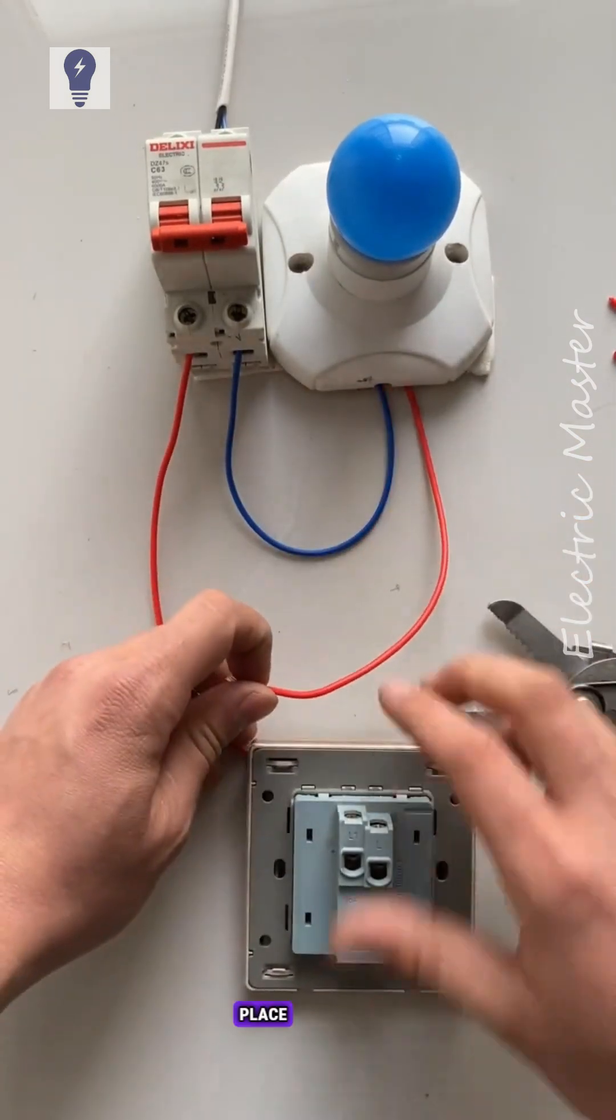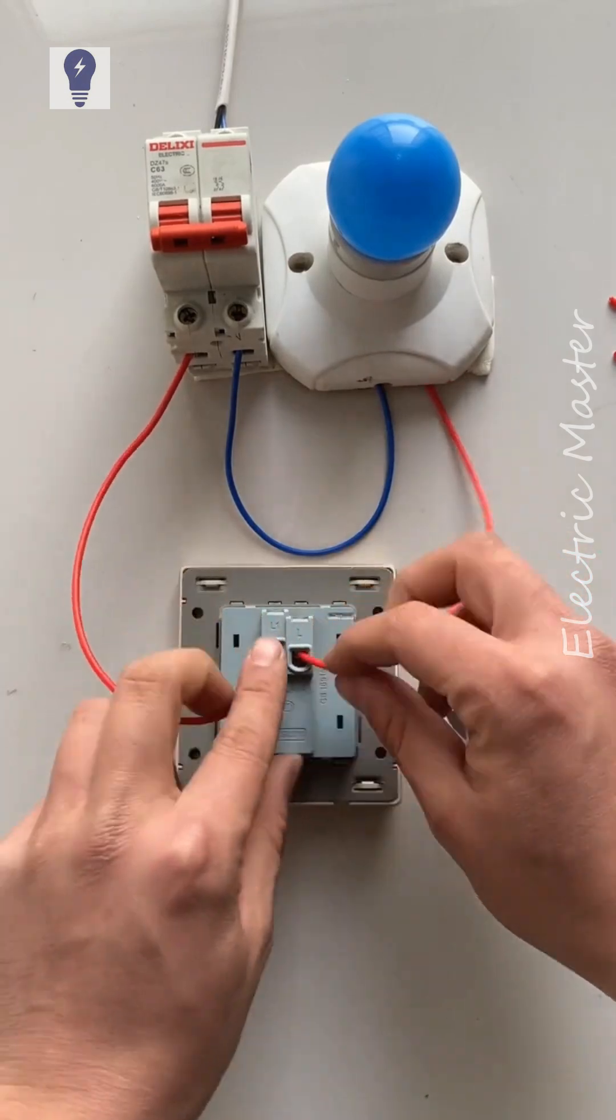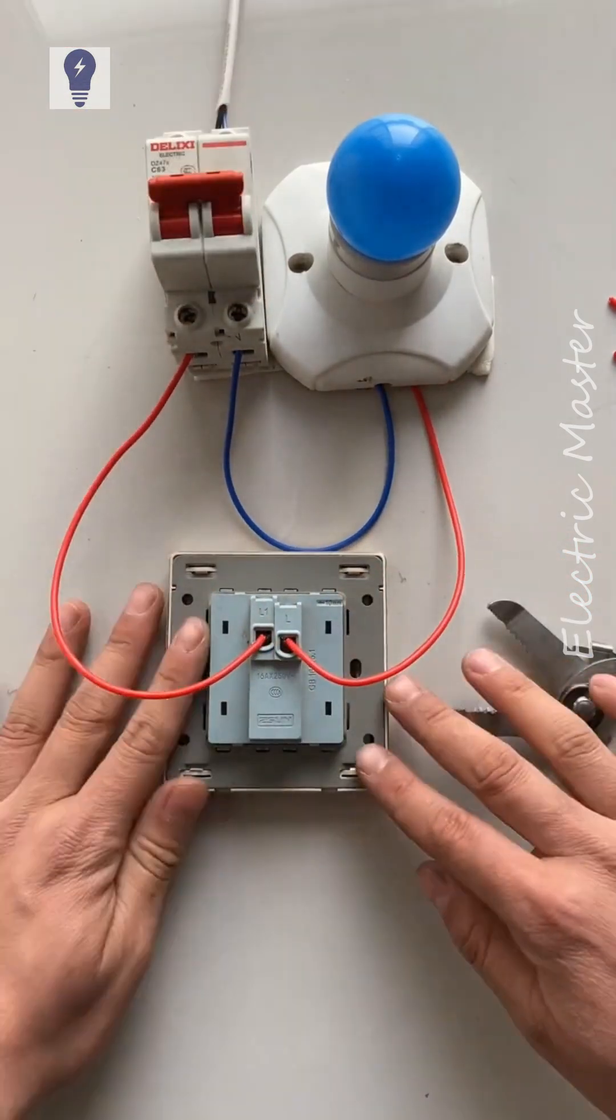Let's prepare a switch. Place these two wires inside it. Now control lights with the switch.